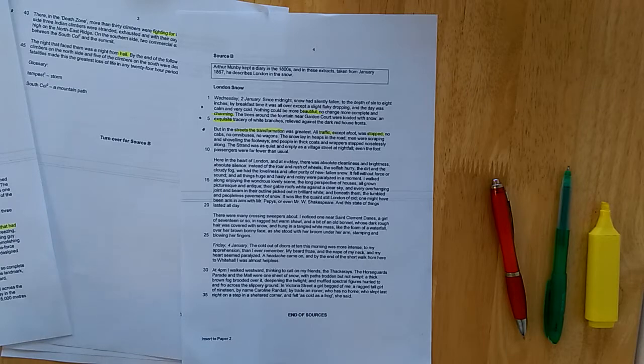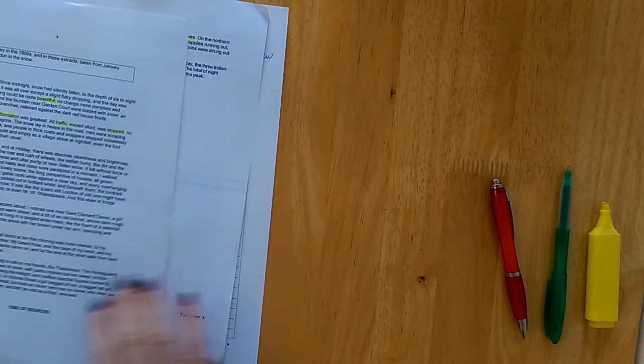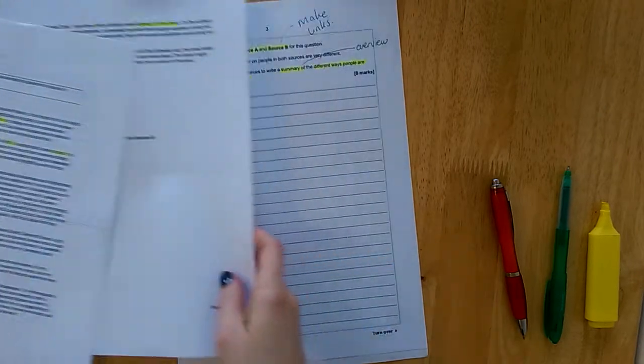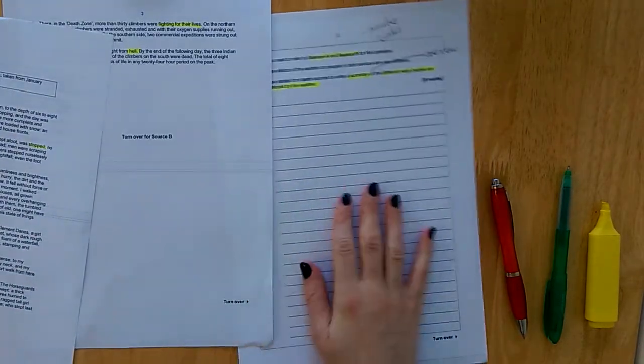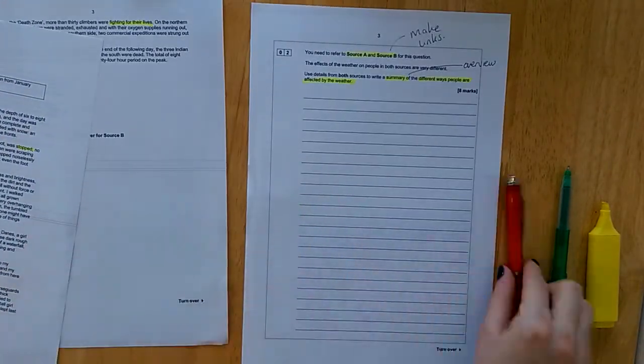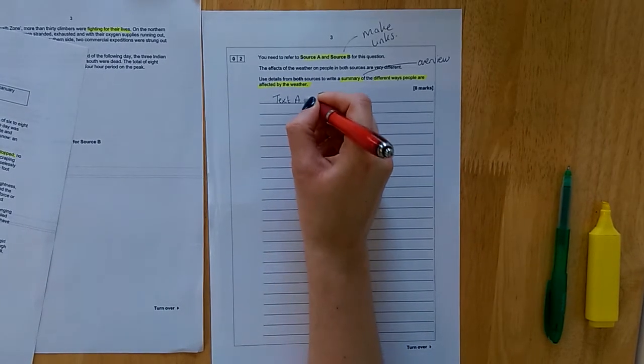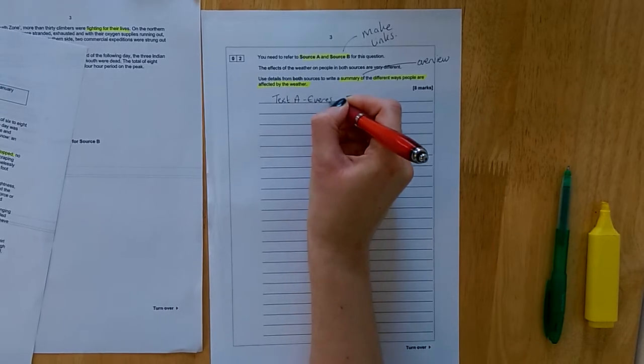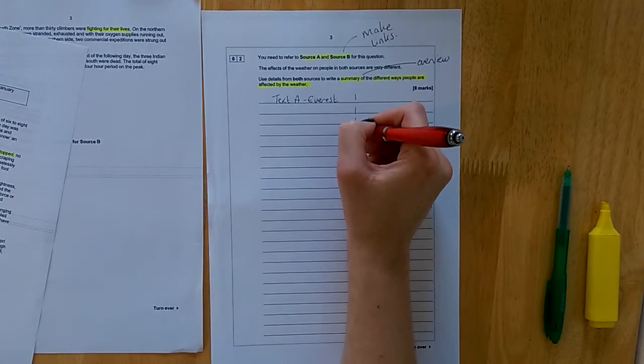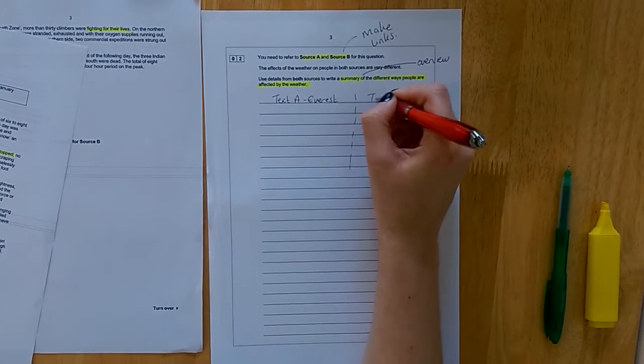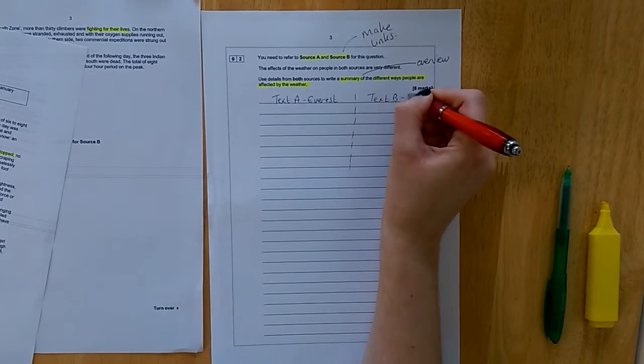So let's write up these ideas. We have ten minutes to do this and I will start with a quick plan. Now, on my writing paper, I'll put that we have text A, that's Everest, you don't want to get them wrong. And text B, London.